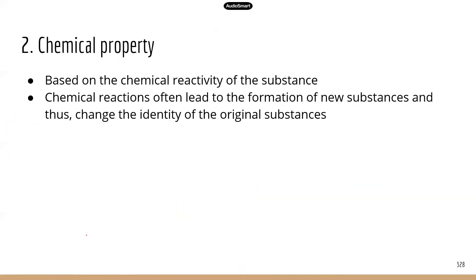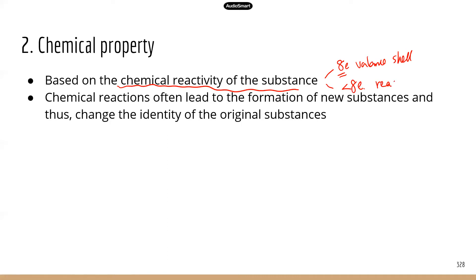Next, chemical property. Chemical property is based on chemical reactivity of a substance. We talk about the number of electrons in the valence shell and how that relates to chemical reactivity. If you have eight electrons in the valence shell, you are stable and tend not to react with other substances. But if you have less than eight electrons in the valence shell, atoms tend to be reactive — they're trying to either lose, gain, or share electrons to get to eight in the valence shell, to satisfy the octet rule.